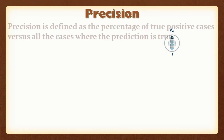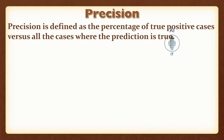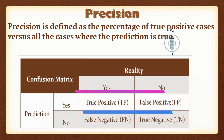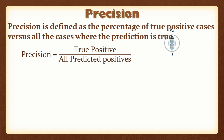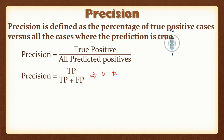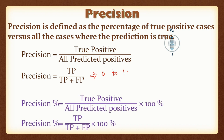Precision is defined as the percentage of true positive cases versus all the cases where prediction is true. In precision we are only looking into the positive predictions. We define precision as true positive divided by true positive plus false positive. This value ranges between 0 to 1. If you are asked for precision percentage, multiply by 100, but not otherwise.